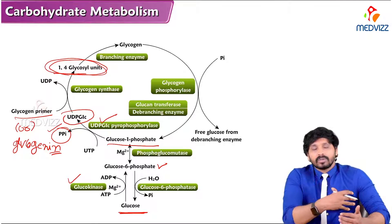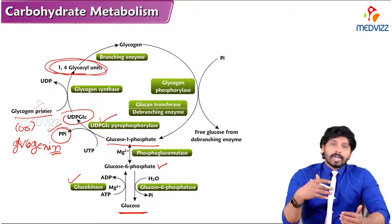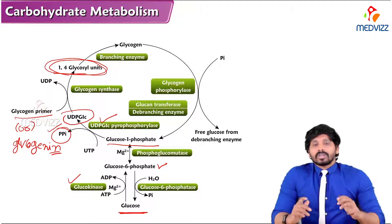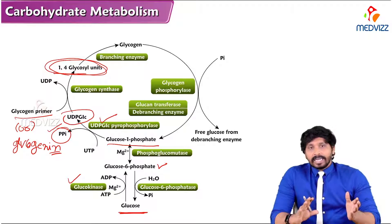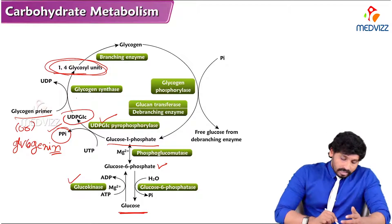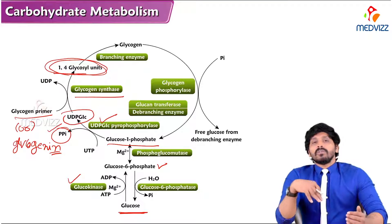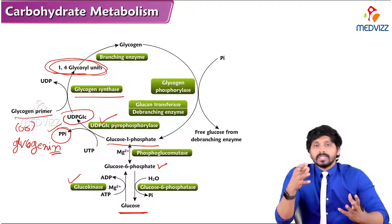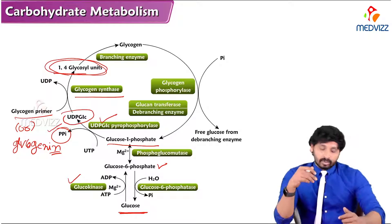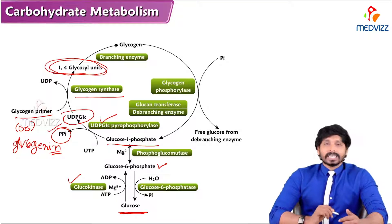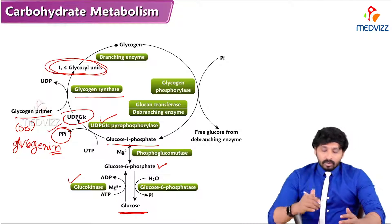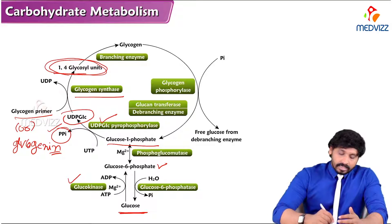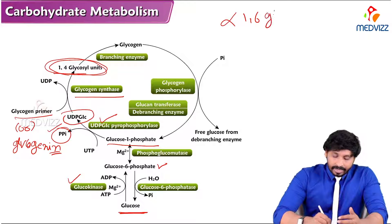Once 8 to 9 glucose units are attached to the glycogen primer, the branching enzyme comes into action. Glycogen synthase can only introduce 1,4-glycosidic linkages, not 1,6-glycosidic linkages. Since glycogen must have both 1,4 and 1,6 glycosidic linkages, the branching enzyme removes some glucose units from the existing chain and creates alpha-1,6-glycosidic linkage branches.